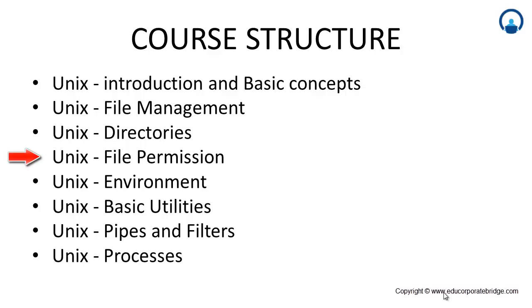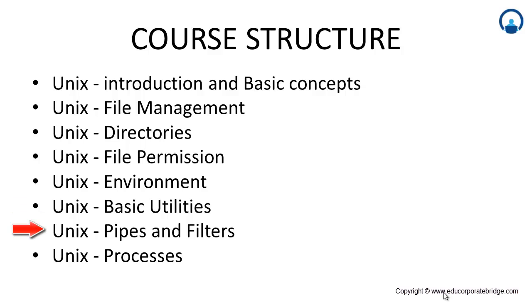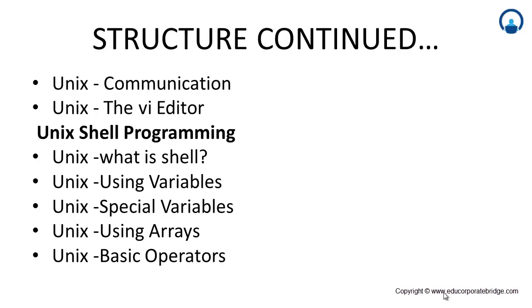Then we have UNIX directories, where we will learn about different types of directories in UNIX. After that, we will learn about file permissions — how a file will be given permission for read, write, and execute. Then we will learn about the UNIX environment — how it is configured, how to use it, and how to execute different commands. Then we will have UNIX basic utilities and different commands.